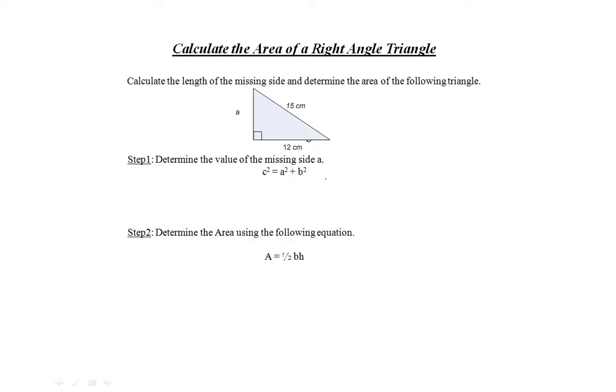Calculate the area of a right angle triangle with a missing side. We'll calculate the length of the missing side and determine the area of the following triangle. Let's follow the steps.